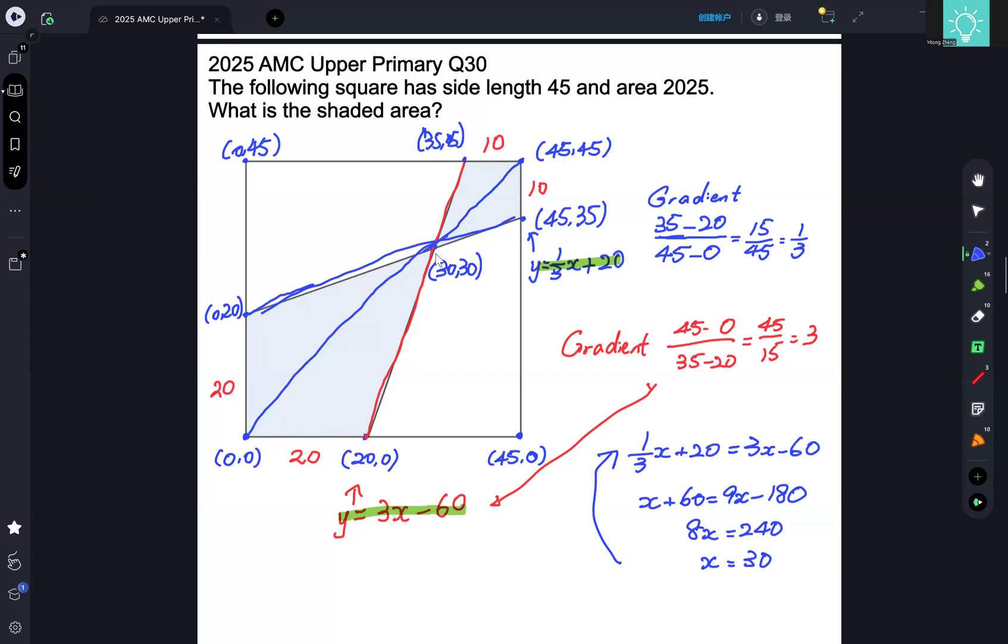And now think about the area of this square down the bottom. Because the y coordinate of this point is 30, we know that the height of this triangle has length 30, and the base of this triangle has length 20. So half times base times height, the area of this triangle is 20 times 30 divided by 2, which is 300.